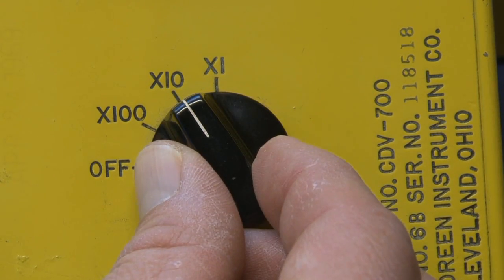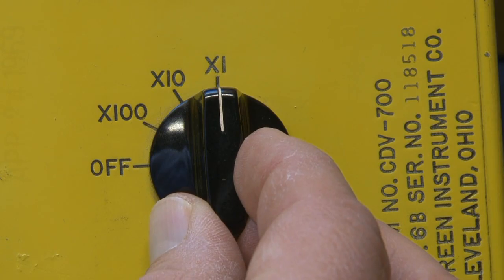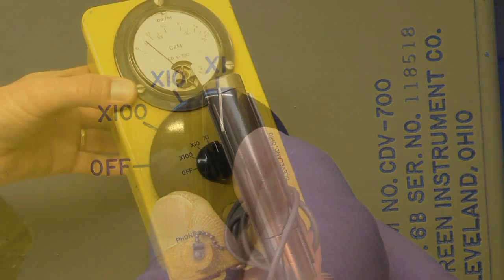times 100, times 10, and times 1, with times 1 being the most sensitive scale.